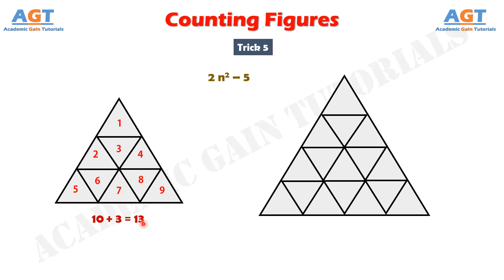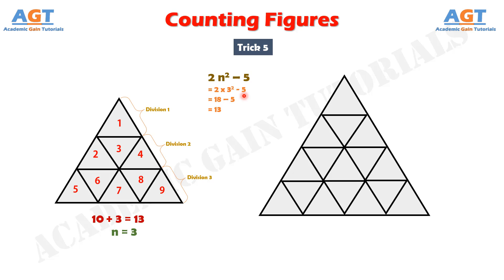We can find the number of triangles using the simple formula: 2n² minus 5, where n is the number of divisions of any one side of the outer triangle. For example, in the first figure, one side of the outer triangle has been divided into 3 parts, so n equals 3. Putting n equal to 3 in the formula: 2 × 3² minus 5 equals 18 minus 5 equals 13. So there are 13 total triangles in this figure. We can take any of the three sides since all divisions are equal.